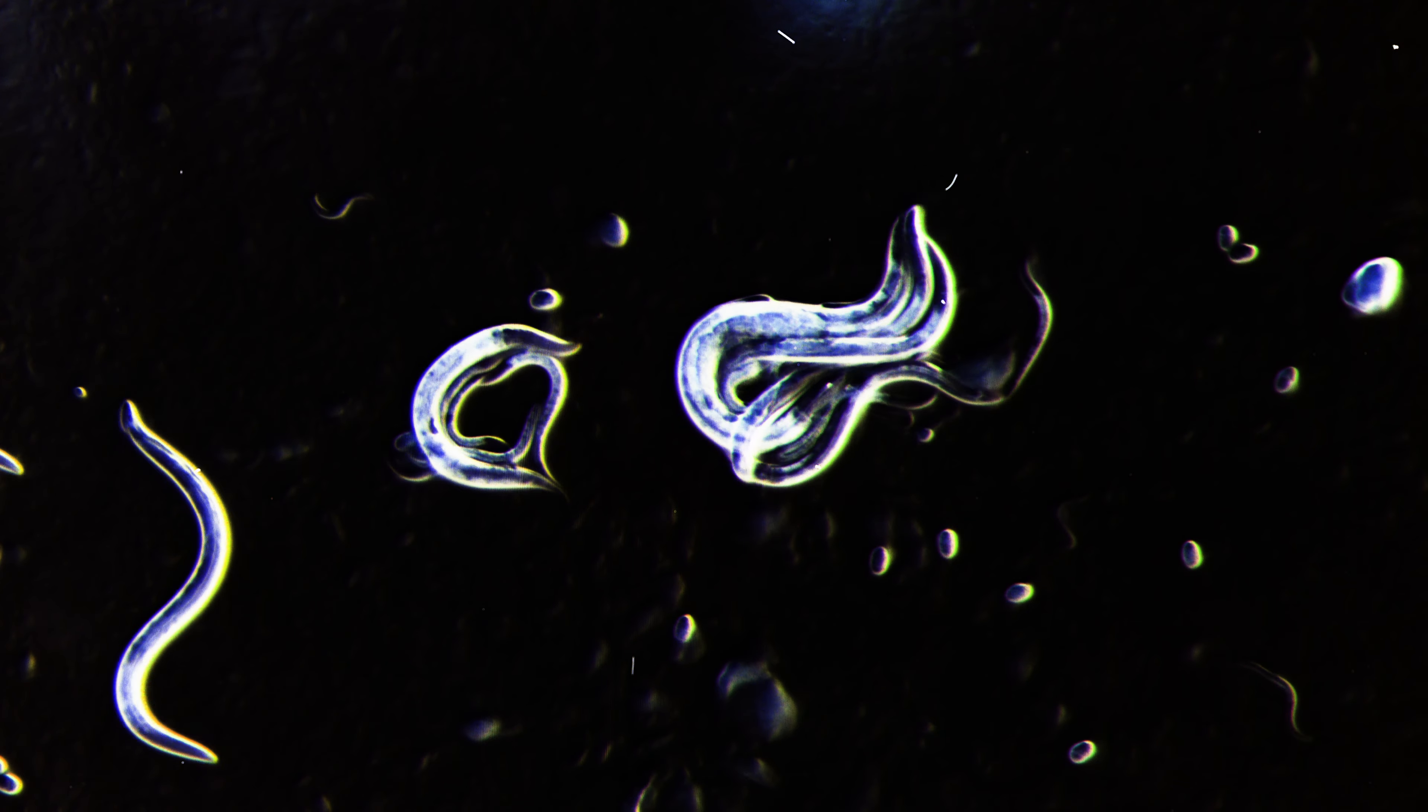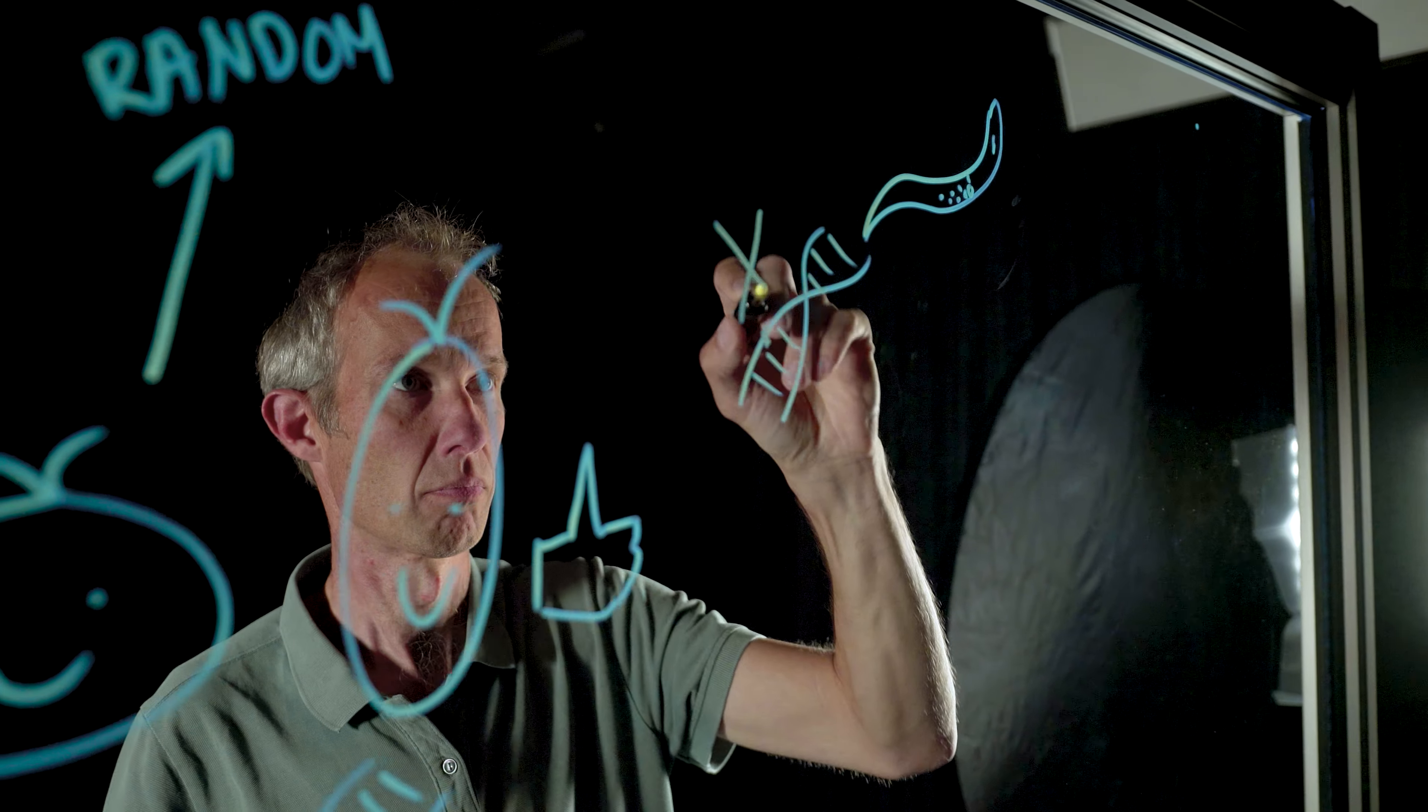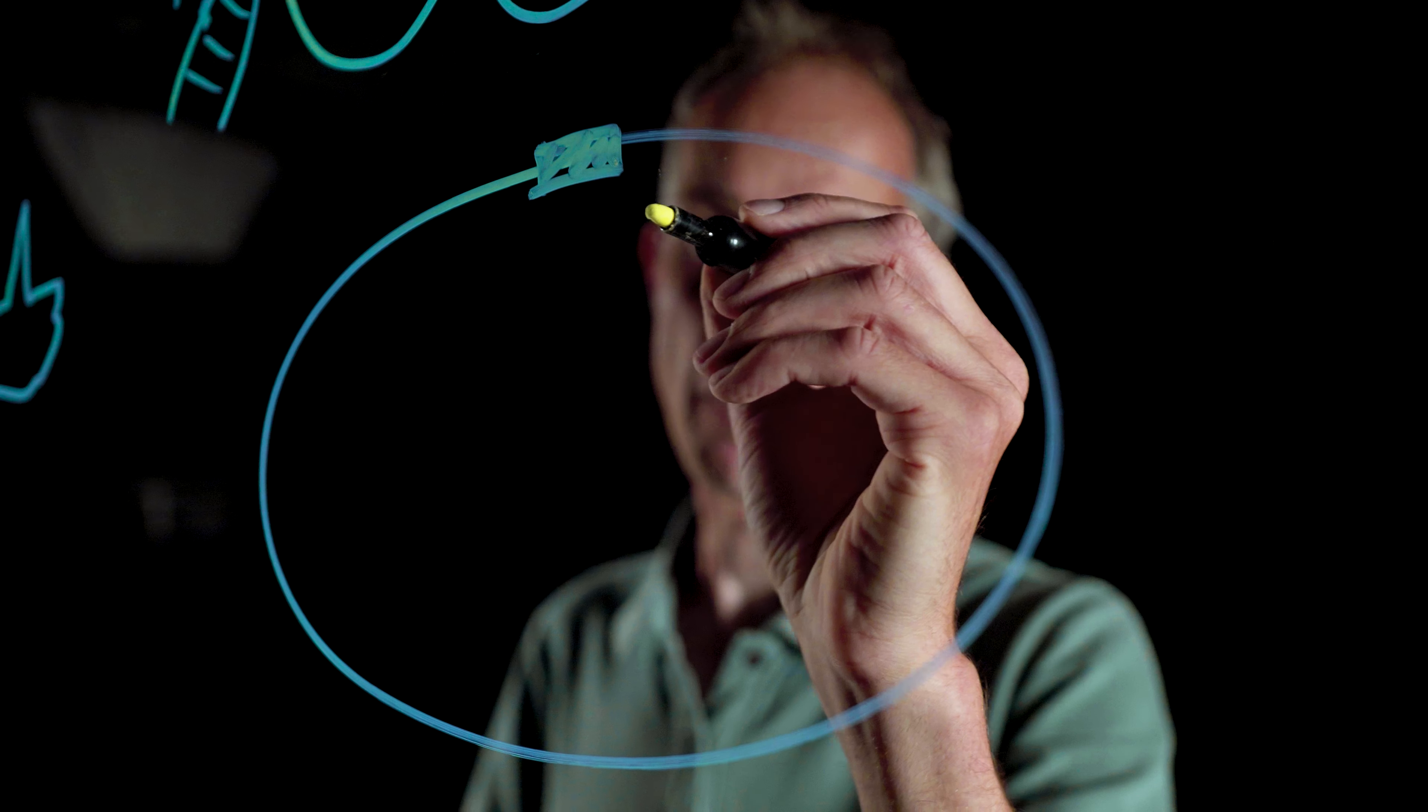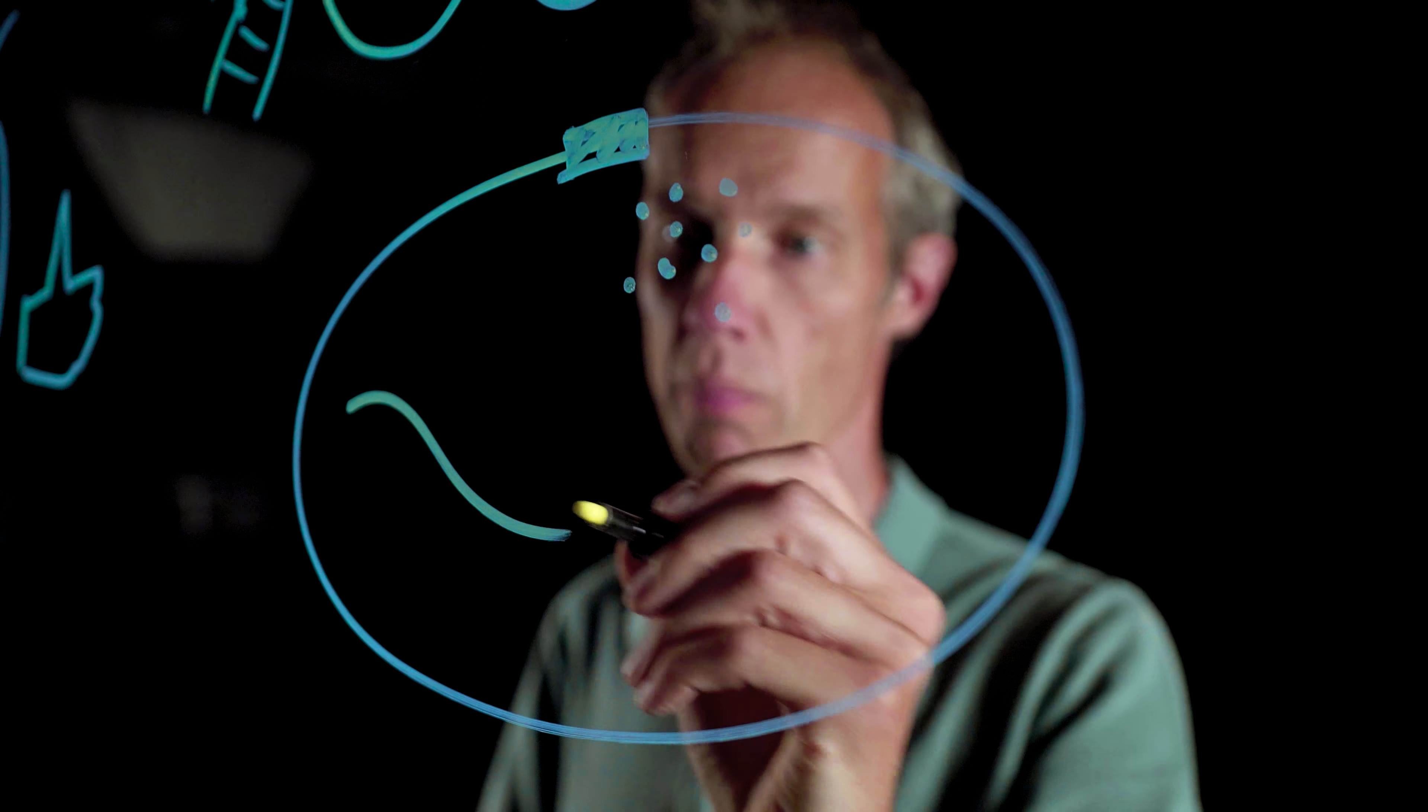To study this, I do experiments in a laboratory using a very simple organism called a roundworm. We know a lot about these organisms and we know that there are a lot of mutants, individuals that have changes in their DNA that cause problems.